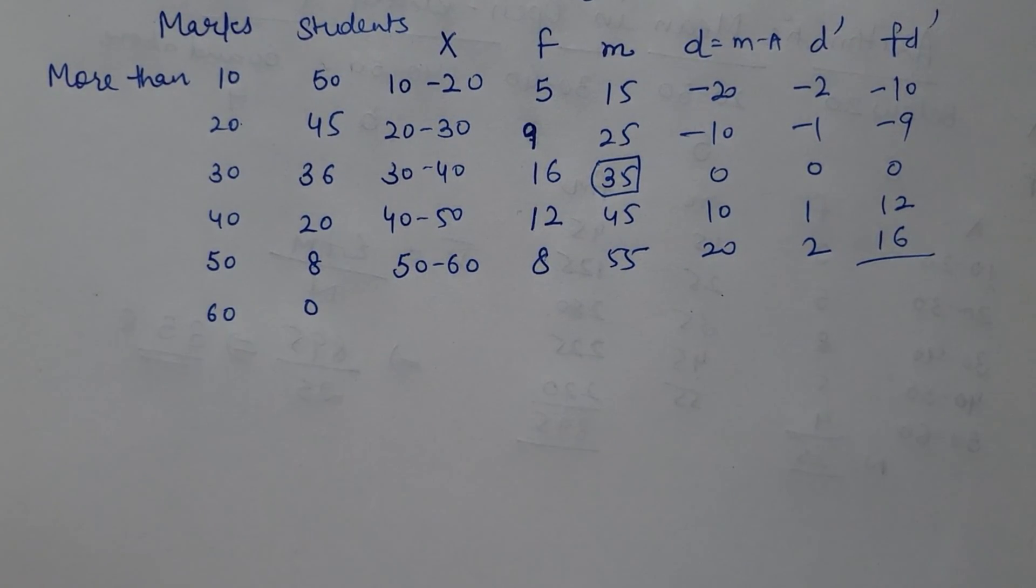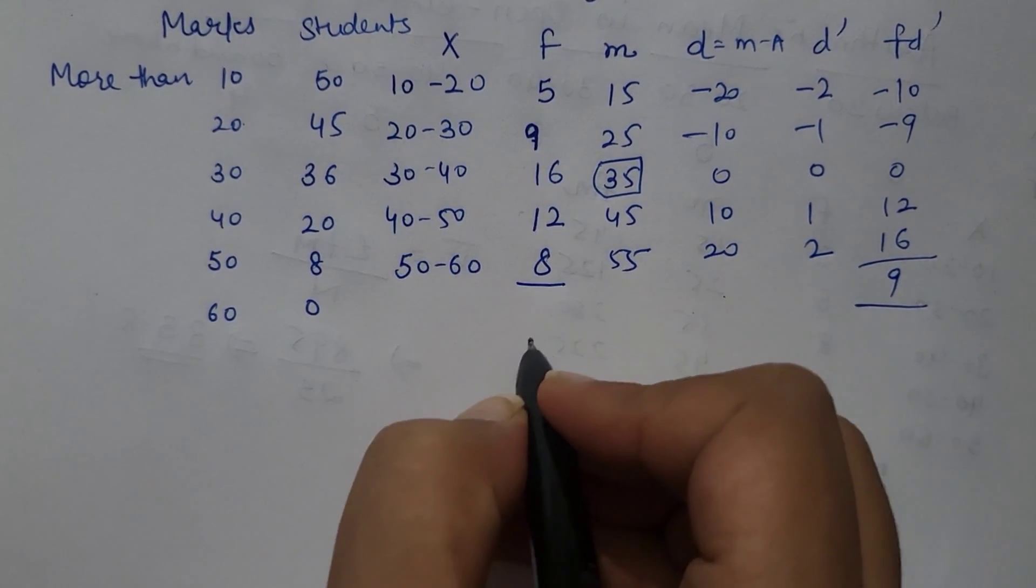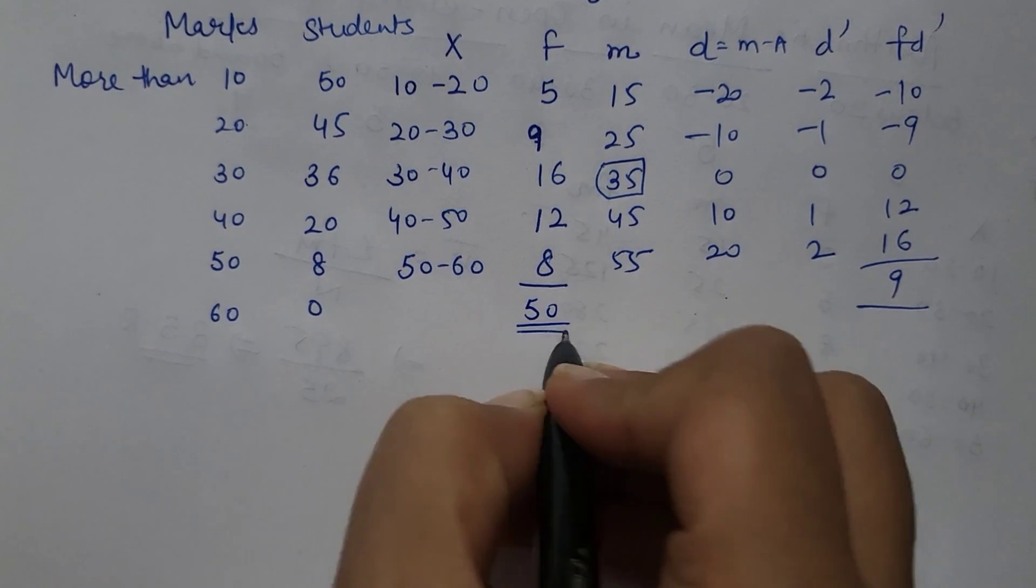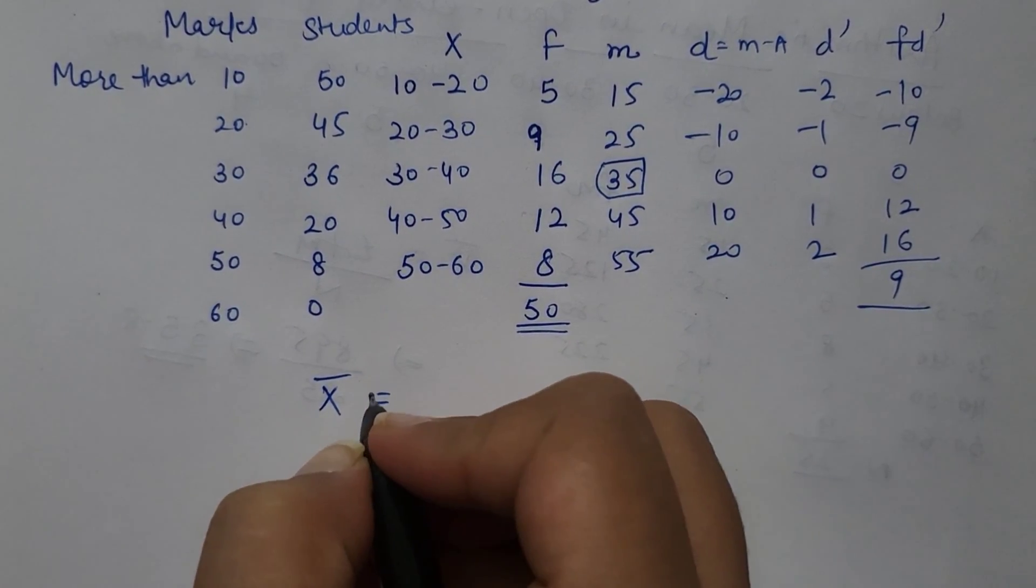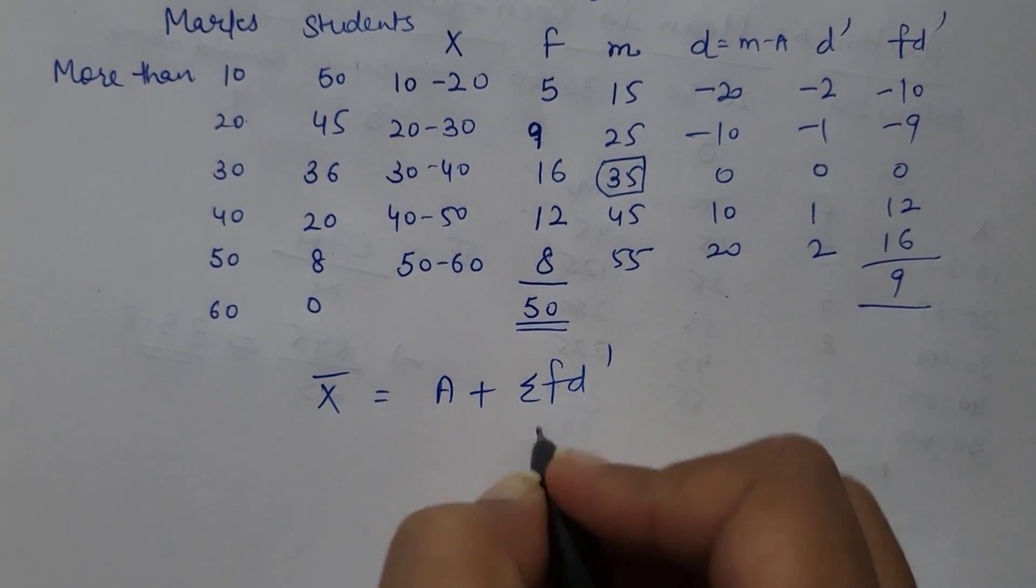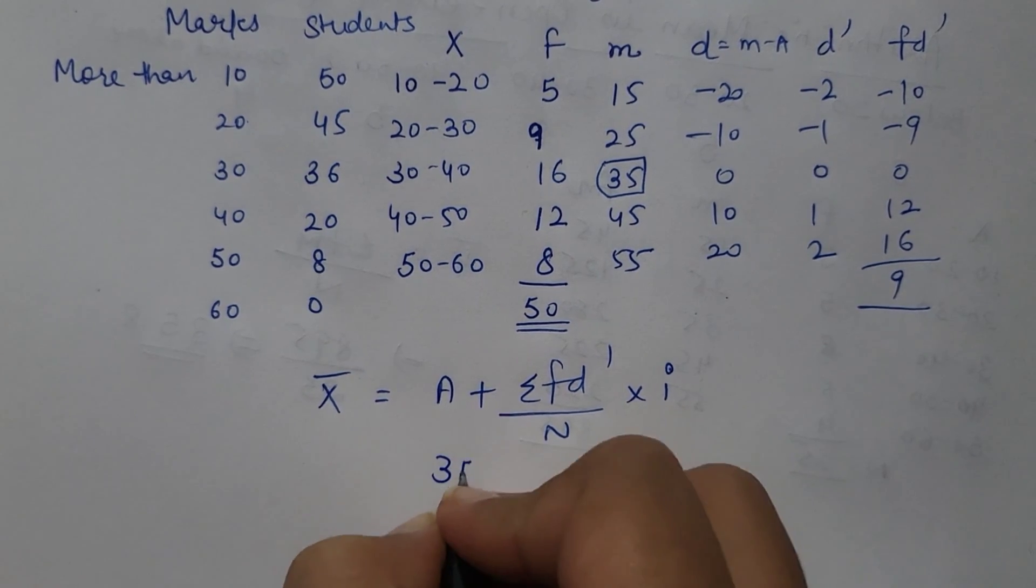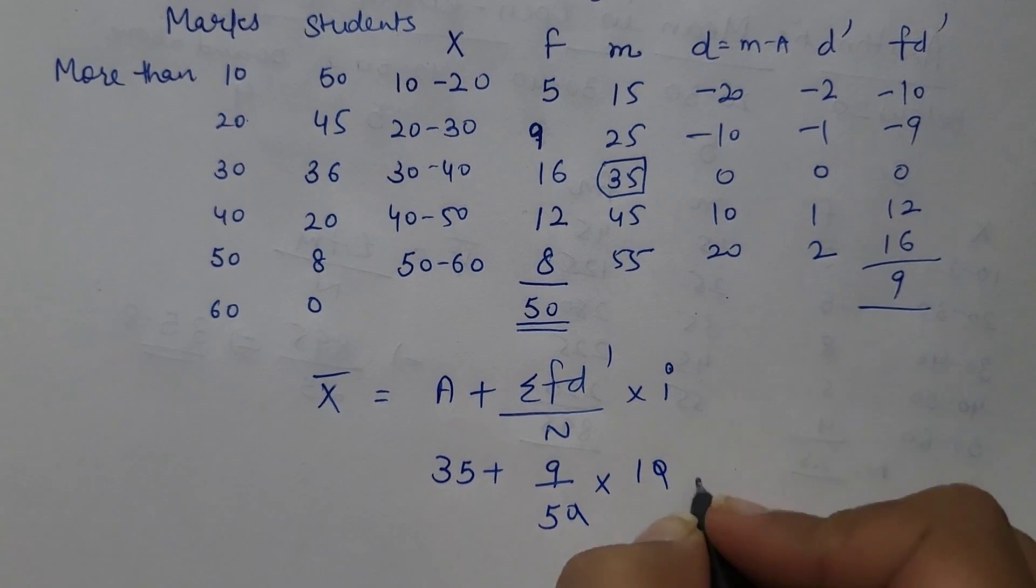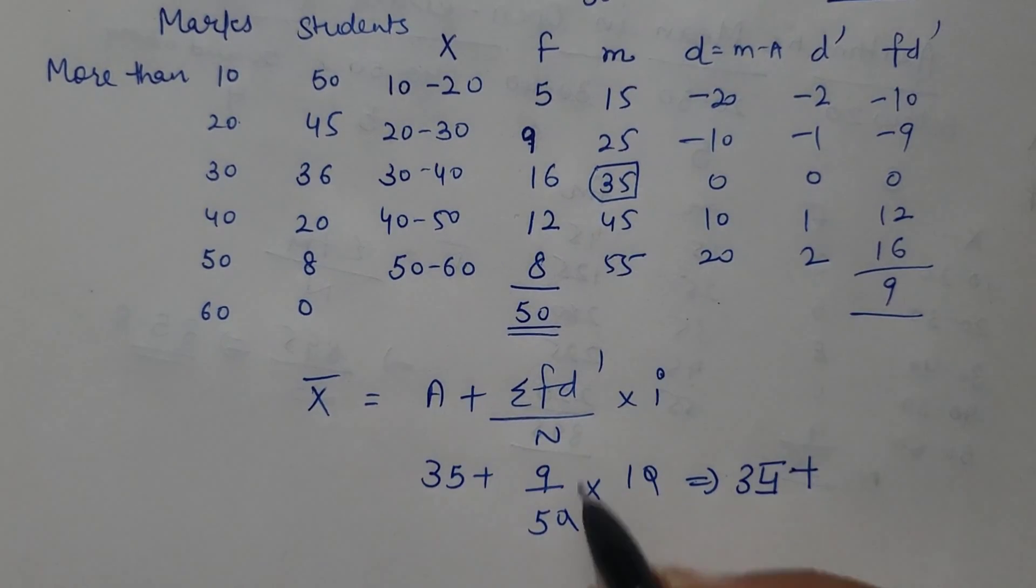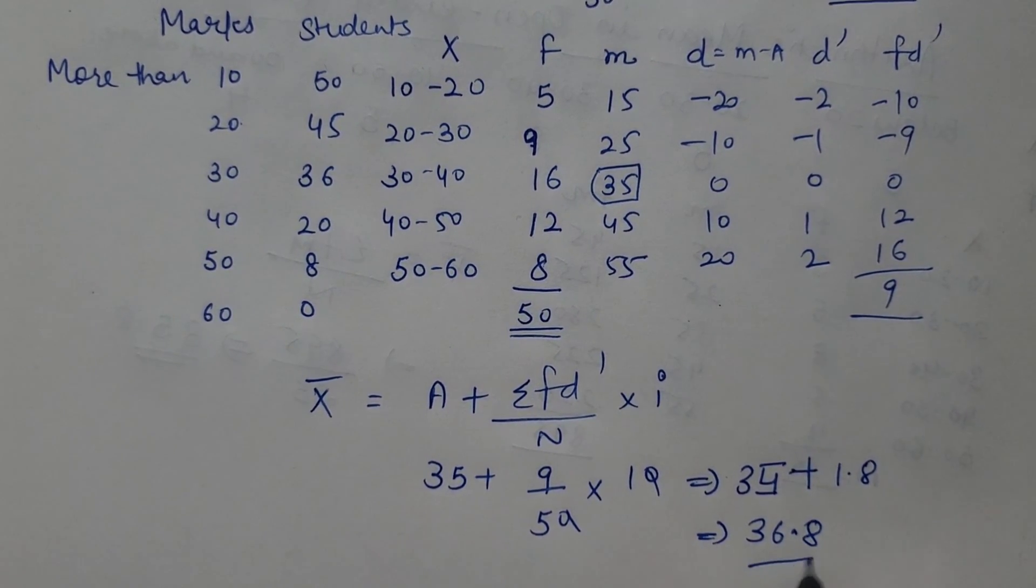So FD dash ka sum yahan pe kya ban gaya? 9. And frequency sum is 50. So mean can be calculated A plus summation FD dash upon N into I. Here is 35, 9 upon 50 into 10. So 35 plus 9 by 5, that would be 1.8. So answer is 36.8.